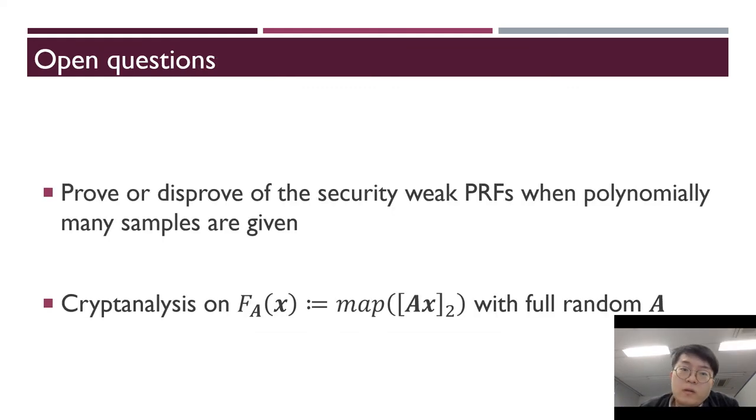First further work is to prove or disprove the security of weak PRFs when polynomially many samples are given. Our attack uses exponentially many samples, so it does not have to change parameters in practical cases. But our attack only uses the statistical weakness of weak PRFs. Thus, if someone combines algebraic properties and our observation, it could be a more effective attack.